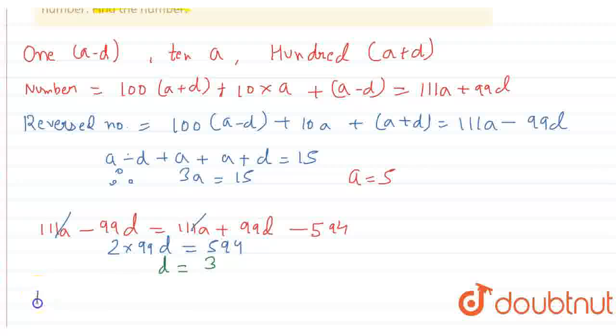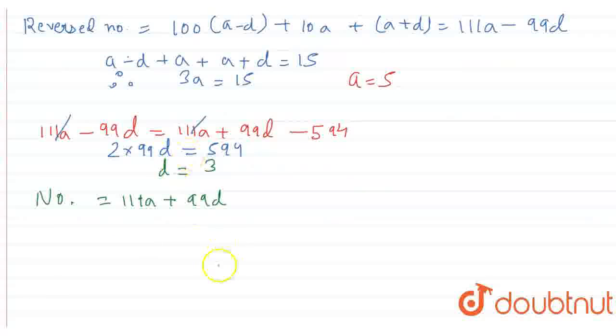Now, the number that we have to find is equals to 111A plus 99D. Now we will put the value of A and D in this equation. And while putting the value, what we will get: 111 multiply 2 plus 99 multiply by 3. And by multiplying all these and adding, we will get 852. This is our answer.